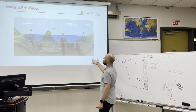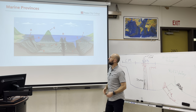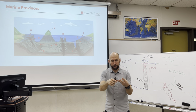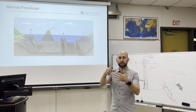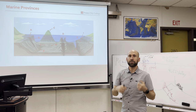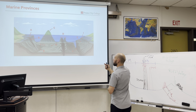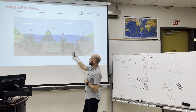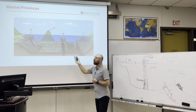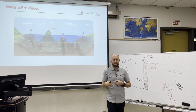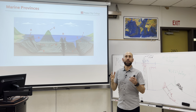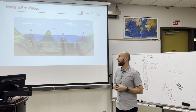Marine provinces have a lot of features: continental shelf, shelf break, continental slope, continental rise, submarine canyons, and oceanic trench. Deep ocean basins have guyots, seamounts, and volcanic islands. The mid-ocean ridge is present and has a rift valley. You're welcome to pause the video and see if you can identify all the features shown.